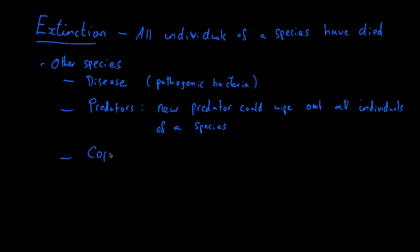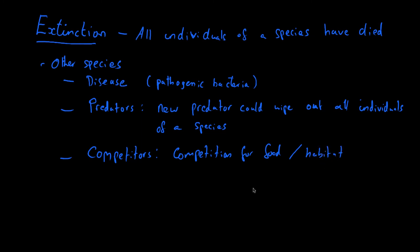Another cause is competitors. These are not organisms which will directly hunt a certain species, but they might come into the same environment and compete for the same food or inhabit the same areas. For example, two separate types of birds both wanting to make nests in trees are competing. If the competitor that's introduced is better adapted to the environment, they could out-compete the other species and cause them to become extinct. So competition for food or habitat can lead to extinction.